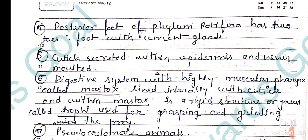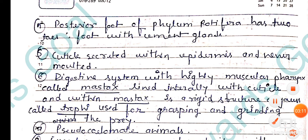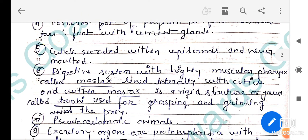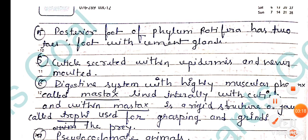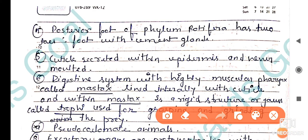The posterior end has a foot with two toes and cement glands. The base of the foot is an adhesive or cement gland which helps with attachment to a substrate by secretion.